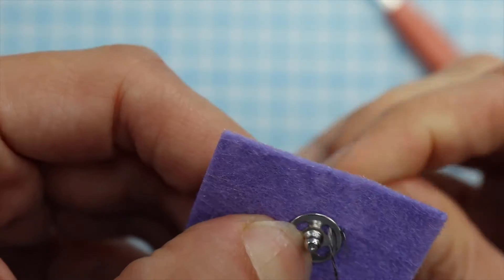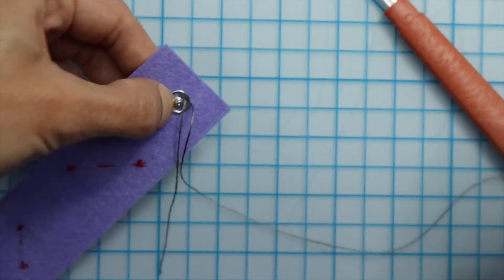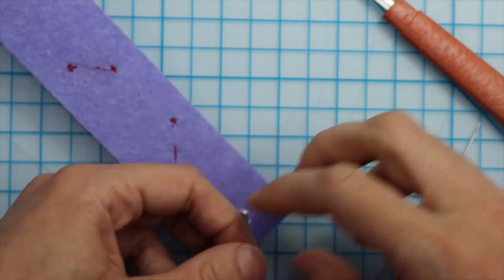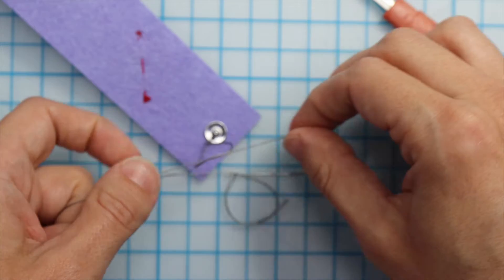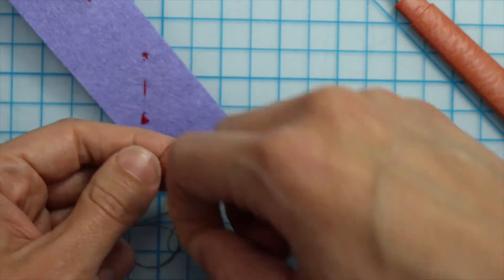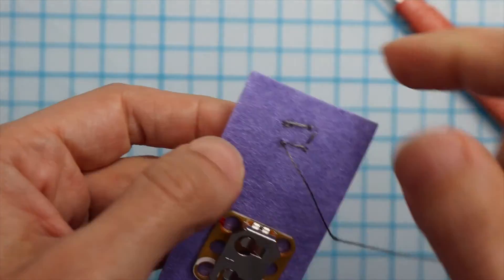When starting and stopping a conductive thread circuit, make sure you have a strong knot that is trimmed tightly. To start, I like to make a stitch through the fabric and back and then tie a triple knot. Then I cut the thread very close to the knot to be sure a loose tail won't short my circuit.